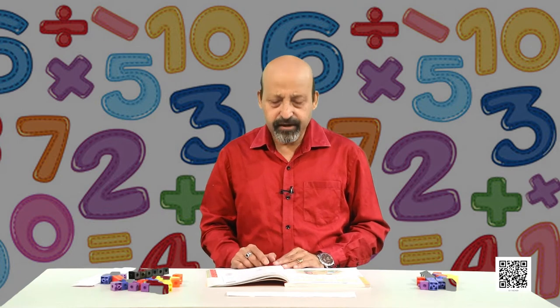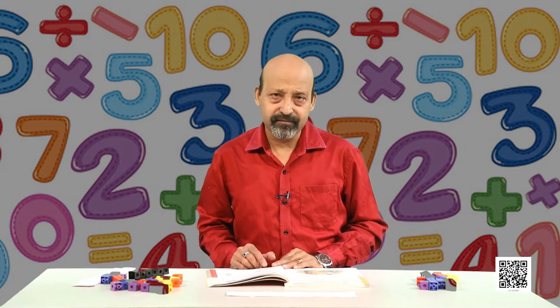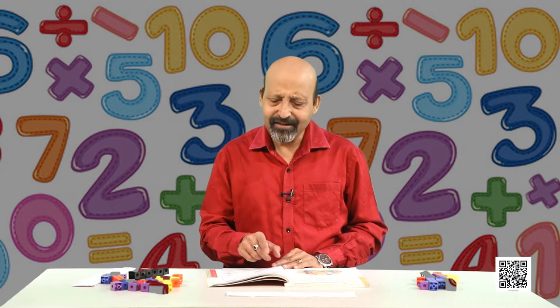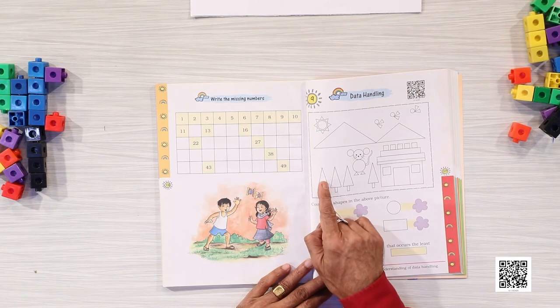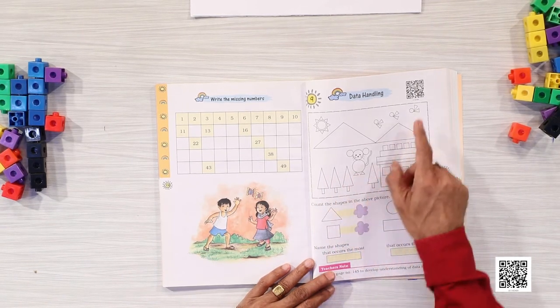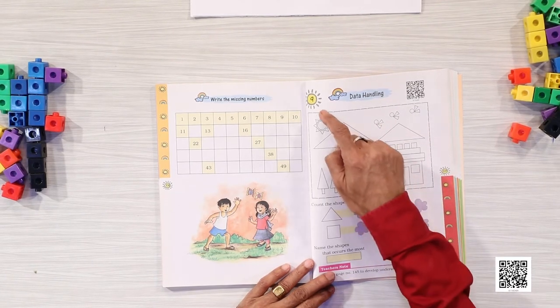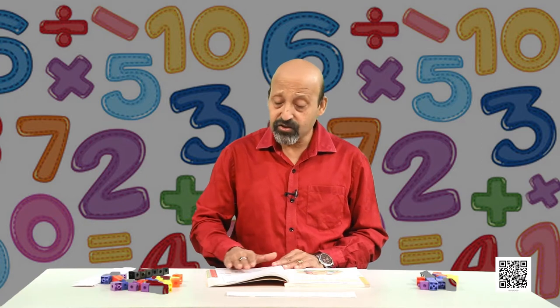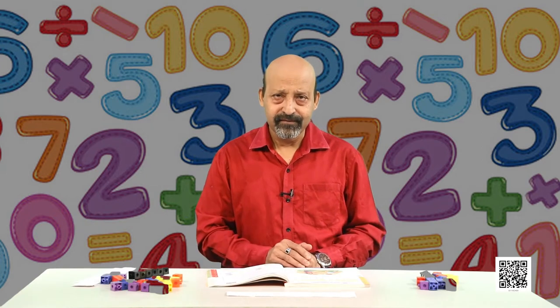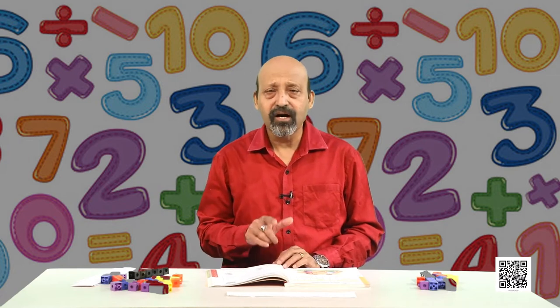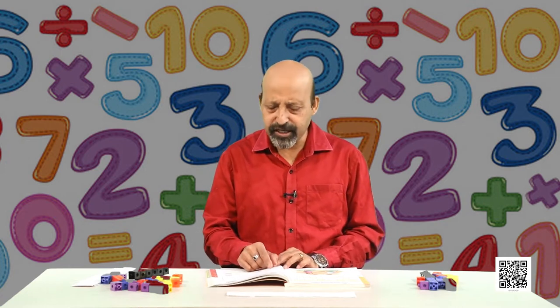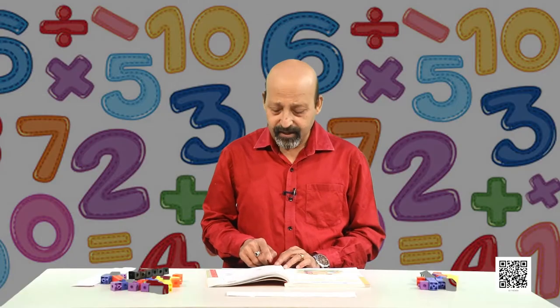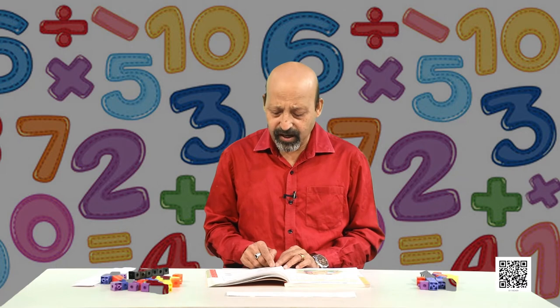Let us now find which shape occurs the most. Can you tell? Let us count again — triangles: 1, 2, 3, 4, 5, 6, 7, 8, 9, 10, 11, 12, 13, 14, 15, 16, 17, 18, 19, 20, 21, 22 — these are 22, and all the rest are less than 22. So the triangular shape occurs the most. You can write the name 'triangle' or you can even draw the shape if you do not know how to write it — draw this shape here so that anyone can find that this shape occurs the most.